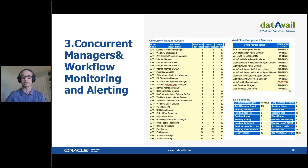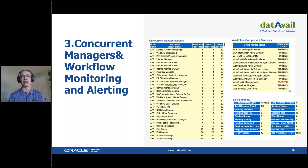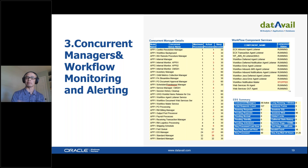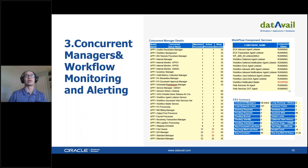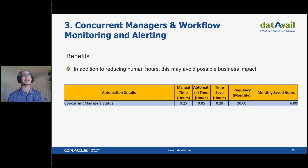With respect to workflow services, any components that impact business function — for example, the workflow notification mailer being down is extremely important. When the mailer is down, no one is notified that an approval is needed, and workflows cannot move along in the process. Benefits: time saving and early issue detection.